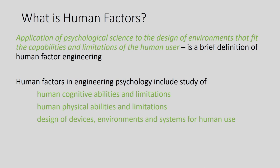These two examples are sufficient to suggest how the principles of psychology can be engineered into solving human-machine interactions and making these interactions more fruitful. Let us start by first defining what human engineering or human factors actually mean. By definition, human factors is the application of psychological science to the design of environments that fit the capabilities and limitations of the human user. This is a very brief and narrow description of human factor engineering.